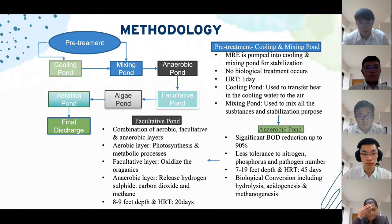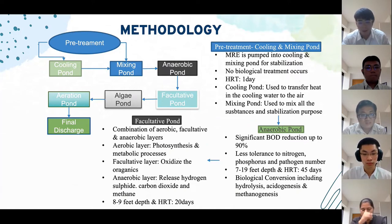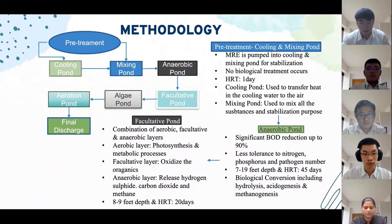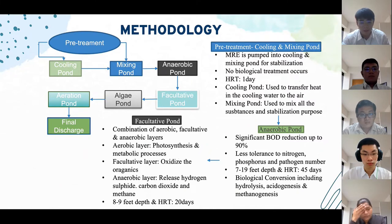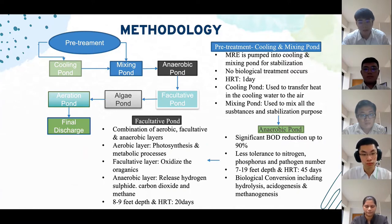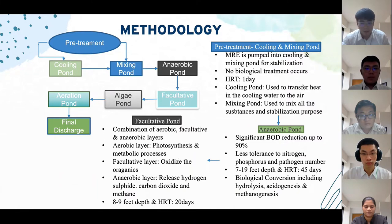The second pond is the facultative pond. In the facultative ponding system, there are three distinct layers: aerobic, facultative, and anaerobic. At the first layer, algae use carbon dioxide, ammonia, phosphates, and sunlight to encourage photosynthesis and metabolic processes, releasing oxygen. At the second layer, facultative bacteria grow rapidly and oxidise organic matter in the middle zone. At the third layer, with total absence of oxygen, anaerobic bacteria consume settled solids and organic matter, releasing hydrogen sulphide, carbon dioxide, and methane. Facultative ponds are usually 9 feet deep with an HRT of 20 days.